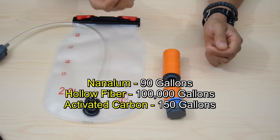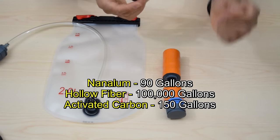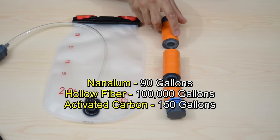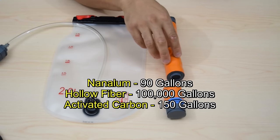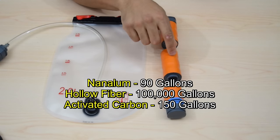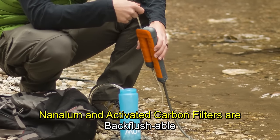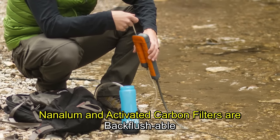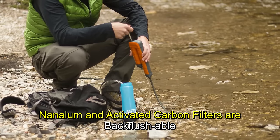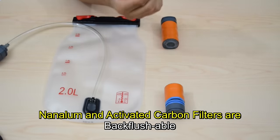Well, the thing is, this can only filter about 60 to 80 gallons, I believe. Don't quote me on that. I'll post the exact amount in the video here. Whereas this hollow fiber filter can filter up to 80,000 gallons, I do believe. Now these two filters can be back flushed, so that may extend the life of them to a certain extent. But generally speaking, this is going to be your main filter.